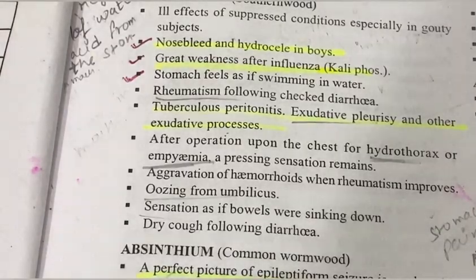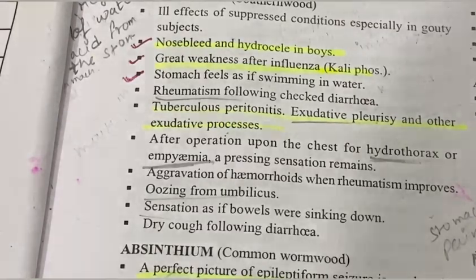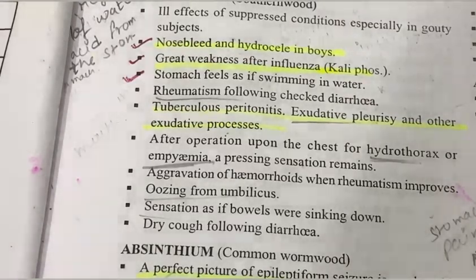Rheumatism following checked diarrhea means that when diarrhea is suppressed, rheumatism develops. Abrotanum is indicated in such cases where suppression of one condition leads to the appearance of another.